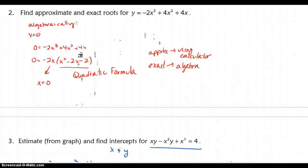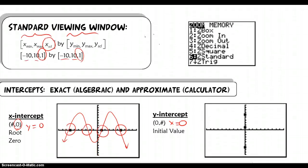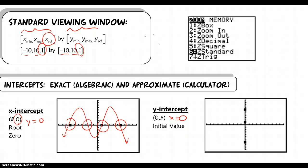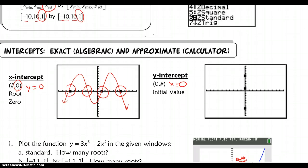So, to recap, in this lesson, what we covered was using your graphing calculator and algebra, we try to find exact and approximate intercepts. We worked on x and y intercepts. So, the main idea here is when you're algebraically solving for an x or a y intercept, when it's an x intercept, set y equal to 0, and when it's a y intercept, set x equal to 0.